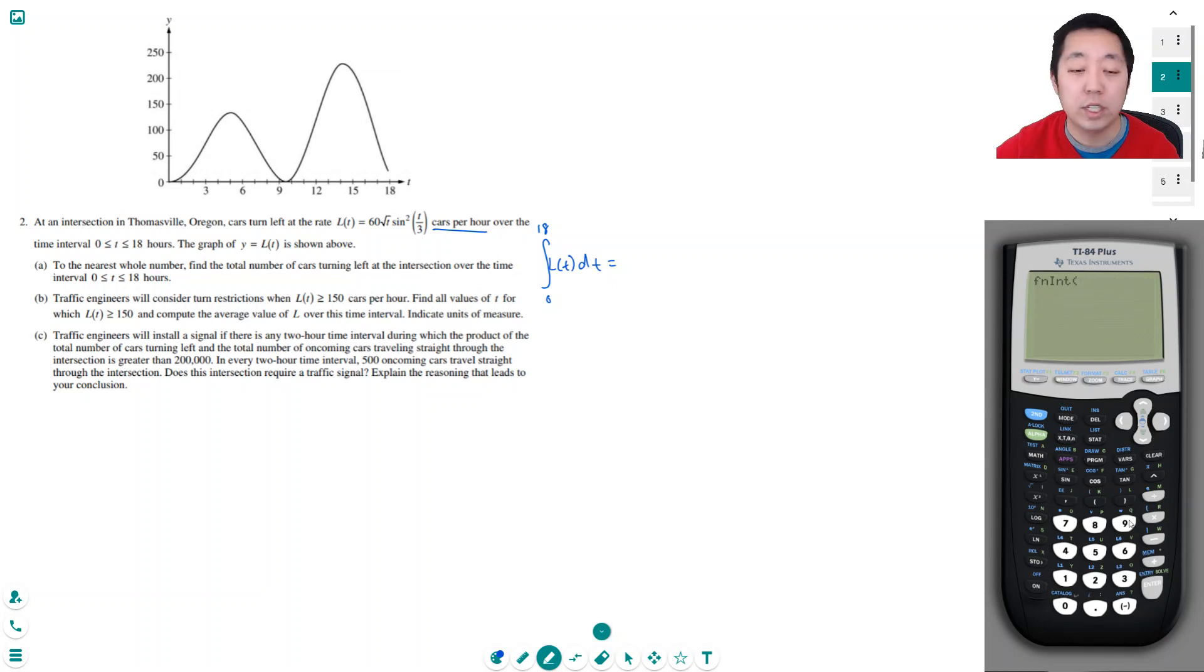Function integral, L(t), which is 60 square root of x sine of x over 3 squared, integrate from x, integrate from 0 to 18. Now I want to check the mode that I'm in. I'm in radian, so that's good.